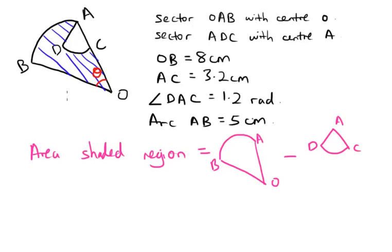Let's just have a fast recall what we found at the previous question. We found the area for AOB is 20 cm². And we found the area for ADC which is 6.144 cm².